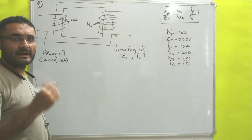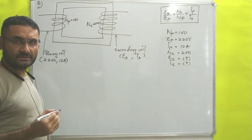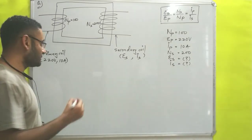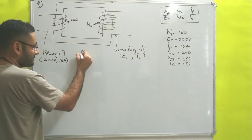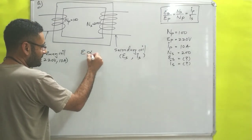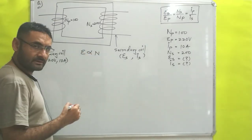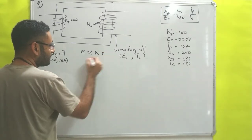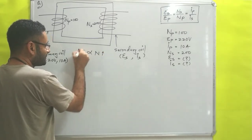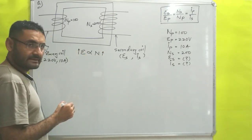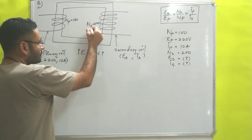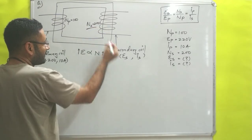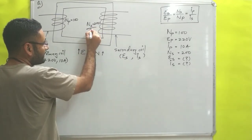Now, EMF or potential is directly proportional to number of turns. That means if you increase the number of turns, potential will also increase.